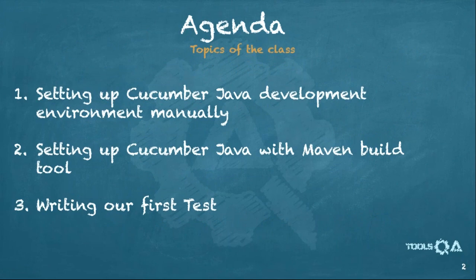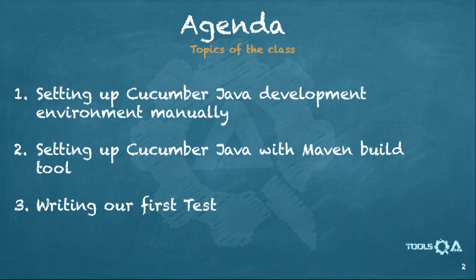The agenda for this class is: first, we will learn how to set up a Cucumber Java project manually, in which we will download all the jars ourselves and then associate the jars with the project. The whole process would be a manual process. I insist on the manual process for all new beginners so that they can understand what is required for setting up a Cucumber project. Then after that, we will use a build tool — Maven — for setting up our project. At the end, we will write a small Cucumber test to verify that our setup has worked properly.